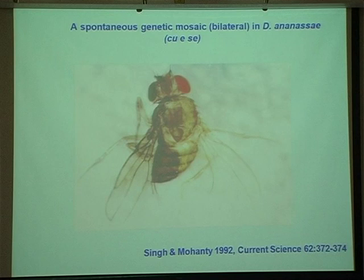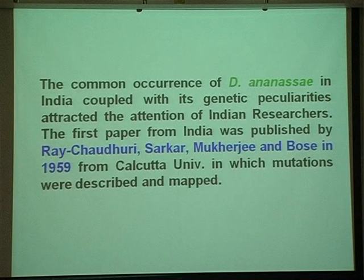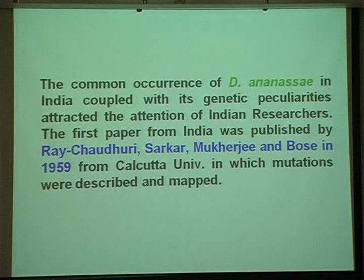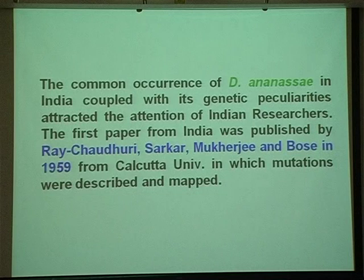It occurred because of double mitotic recombination in Zaize. The common occurrence of ananassae in India, coupled with genetic peculiarities, attracted the attention of Indian researchers. The first paper from India was published by Rajchoudhuri, Sarkar, and Mukherjee in 1959. In India, ananassae work was started by Professor S.P. Ray Chaudhuri at Calcutta University in the 40s and 50s. When he moved to Banaras Hindu University, he continued his work. I joined research under Professor S.P. Ray Chaudhuri.